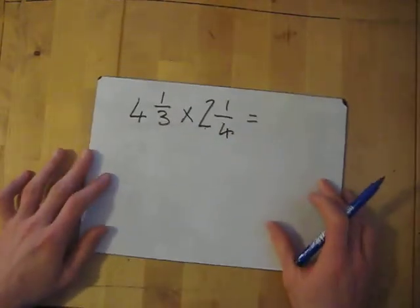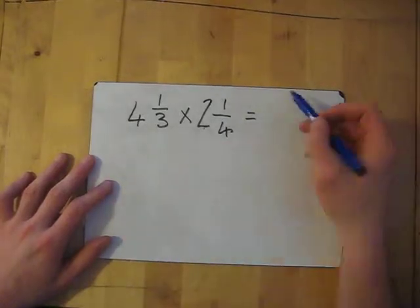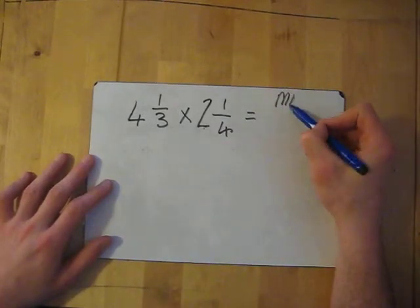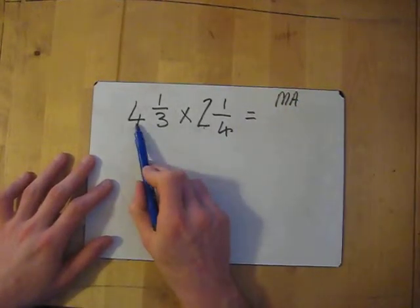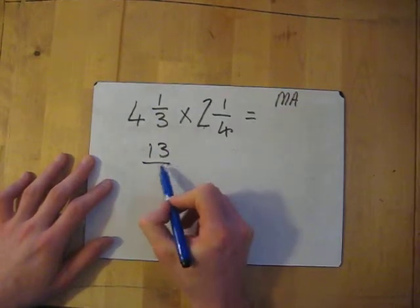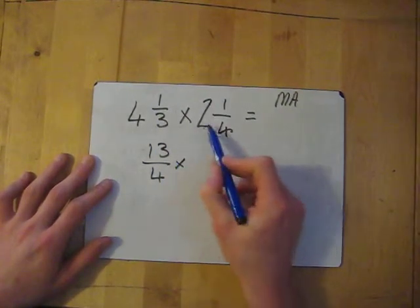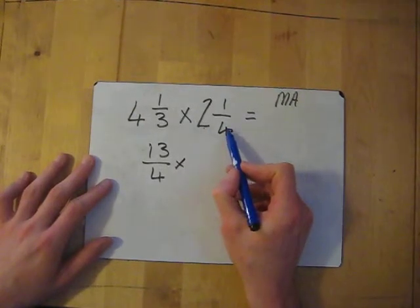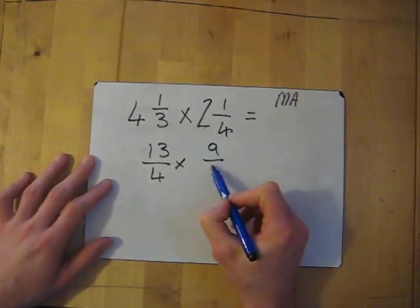Okay, let's have a go. 4 1/3 times 2 1/4. So, turn it into our improper fraction. MA. So 4 times 3 is 12, add 1 gives me 13. 13 over 4. Times 2 times 4 gives me 8, add 1 is 9, over 4.